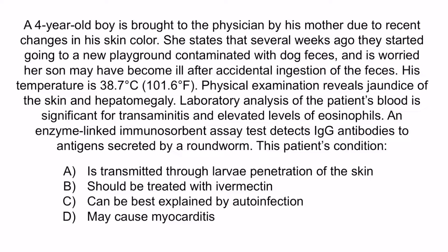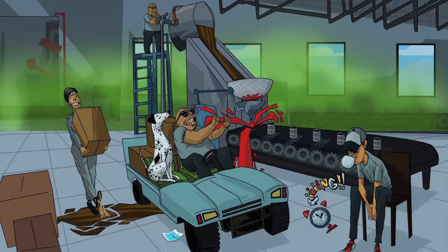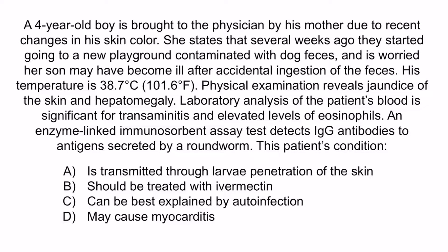From the question, you should notice that this boy may have ingested dog feces and now has a fever of 38.7 degrees Celsius, jaundice, and hepatomegaly, which suggest hepatitis. Also, an ELISA test detected the presence of a roundworm. Of all the roundworms, Toxocara canis is most classically associated with hepatitis. So the correct answer is D, may cause myocarditis. Recall that the liver spot on the Dalmatian is here to help you remember that Toxocara canis causes liver problems such as hepatitis, and the strong guy in the car is here to help you remember that Toxocara canis can cause myocarditis.